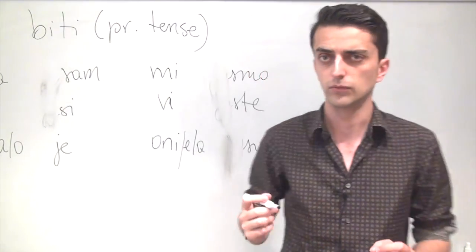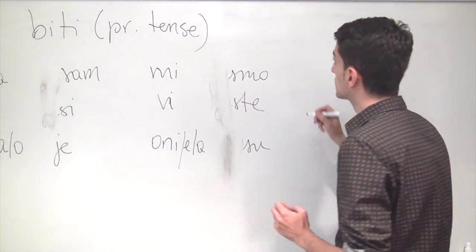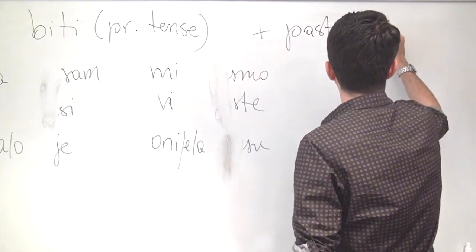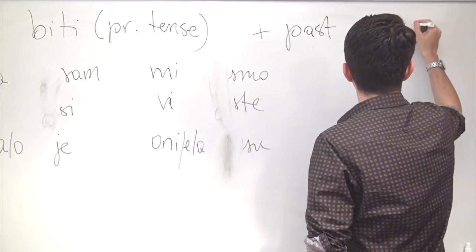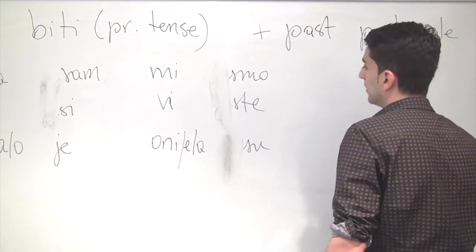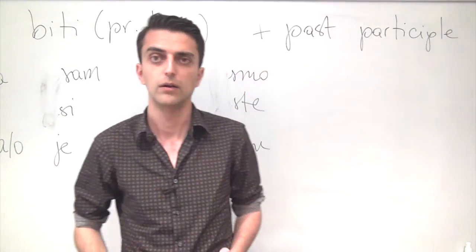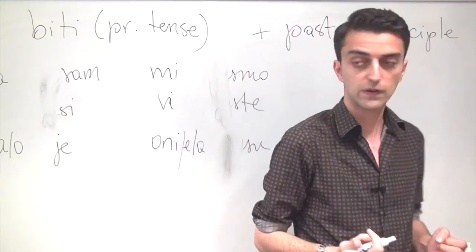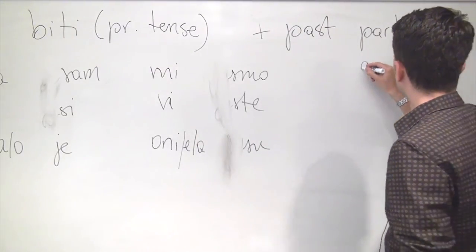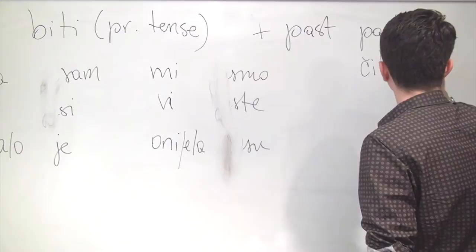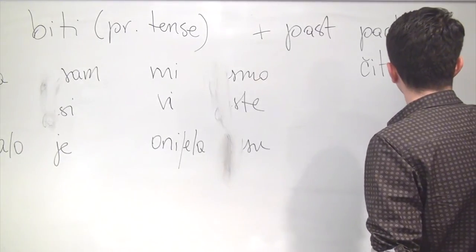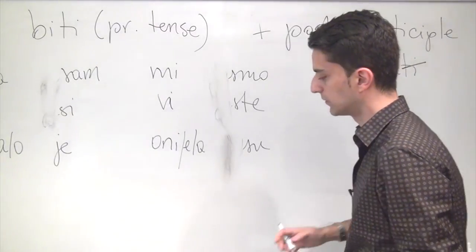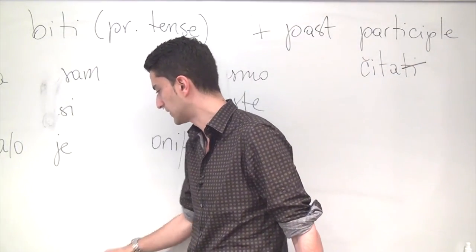And the second building block that we need to create past tense is the past participle of the main verb. How do we get to the past participle? Well, we need to take the main verb. We'll use, say, čitati. And then we need to get rid of the infinitive suffix, and then we need to add some appropriate suffixes.